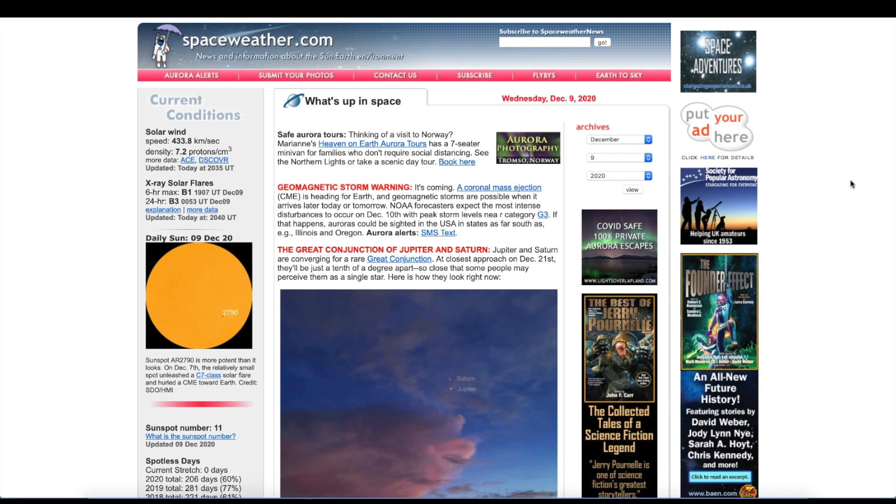NOAA forecasters expect the most intense disturbance to occur on the 10th with peak levels near G3 levels. If that happens, auroras could be sighted in the United States as far south as Illinois and Oregon.